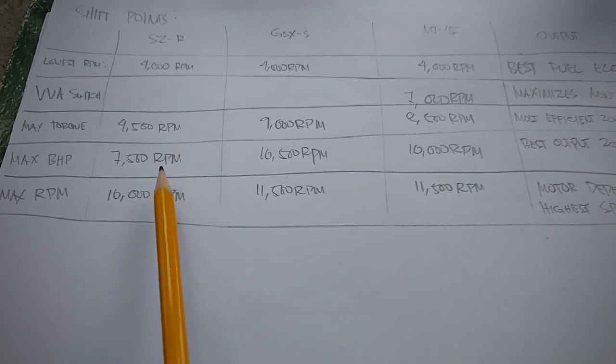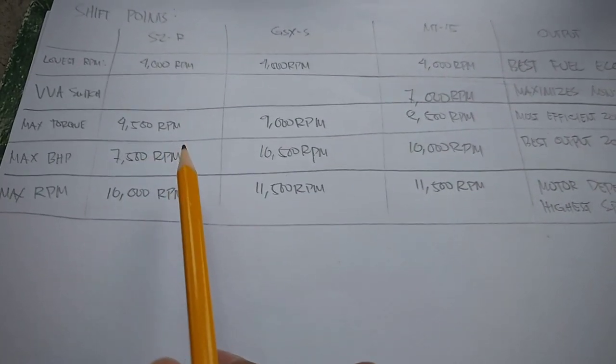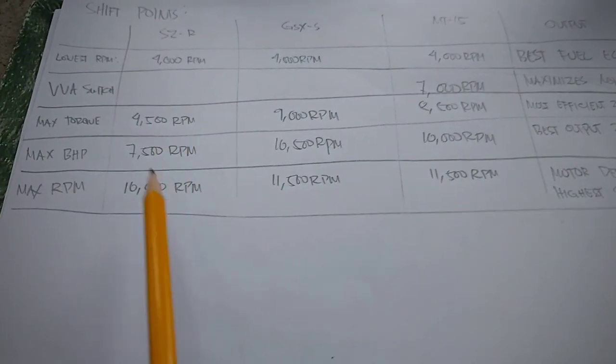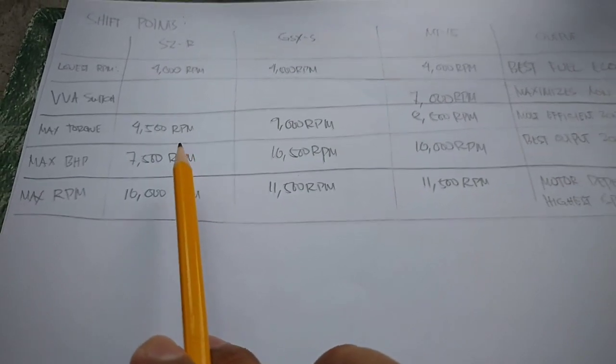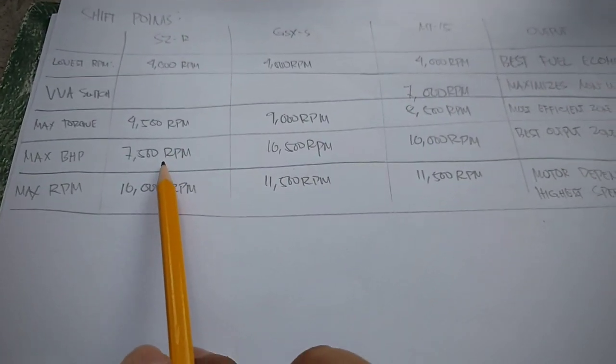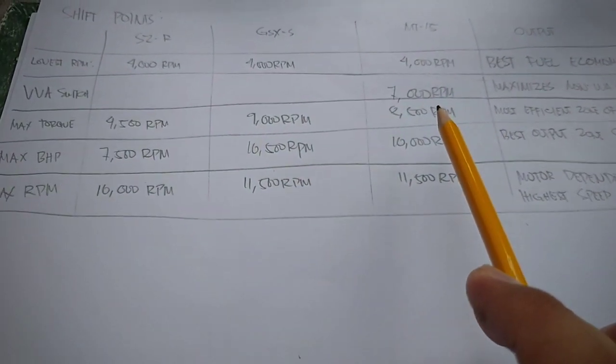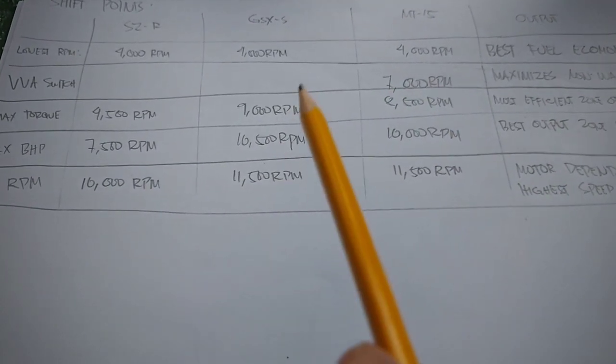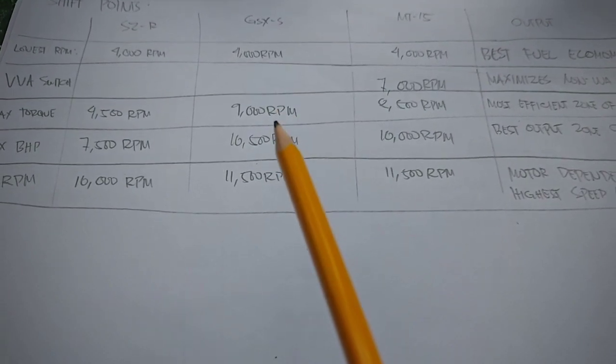So anong ibig sabihin yan? Generally, kapag low revving ang motor mo, wala ka ng hatak sa upper part ng RPM range. So it's not efficient and it's not useful na gamitin yung power lagpas dun sa maximum horsepower RPM range mo. So hindi ka na-efficient, nagsasayang ka ng gas, mas mabilis umikot yung makina kesa yung na-produce niya na horsepower at torque.